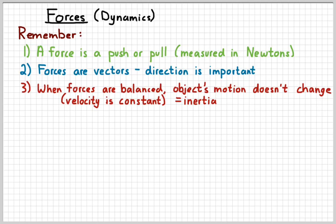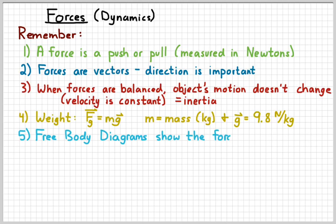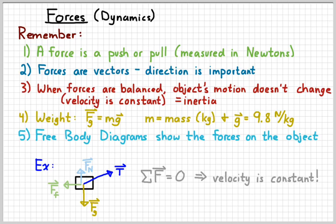This is often referred to as Newton's first law of motion. Fourthly, remember how to calculate the weight of an object — just multiply m times g, where m is the mass and g is the gravitational field, which has a value of 9.8 newtons per kilogram, which we typically round up to 10. It typically points down. And fifth, we can draw a free body diagram to visualize the forces on an object. Back in the day, we would have things like this, and we would know that the forces are balanced, so they add to zero, and the velocity of the object would be constant.